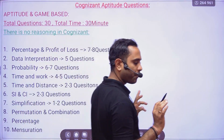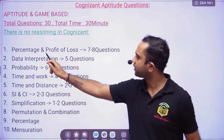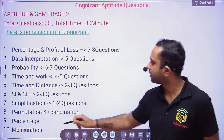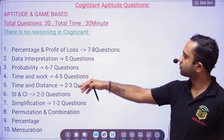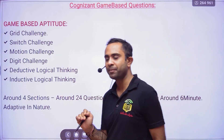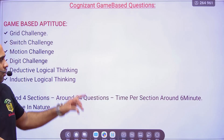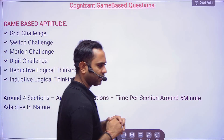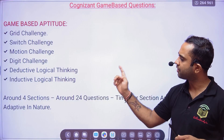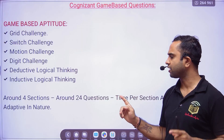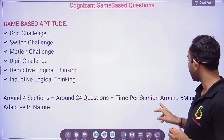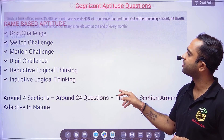So it's actually 10 topics — percentage and profit and loss I have counted as one, giving 10 questions total. Then there will be game-based aptitude. On our channel, the game-based video is already done. There is grid challenge, switch challenge, motion challenge, digit challenge, deductive logical thinking, and inductive logical thinking. There are around four sections, around 24 questions, time per section around six minutes, and it is adaptive in nature.